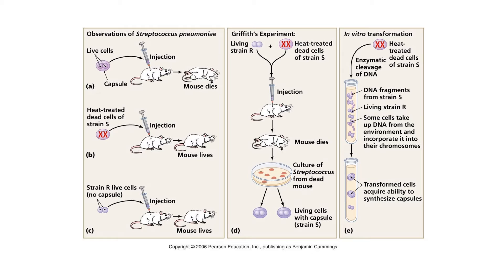Griffith did some simple introductory experiments. He took living S strain bacteria and injected them into mice — the mice got pneumonia and died. He took R strain bacteria and injected them into mice — the mice did not get pneumonia and did not die. The difference was that the S strain had a capsule and the R strain did not.